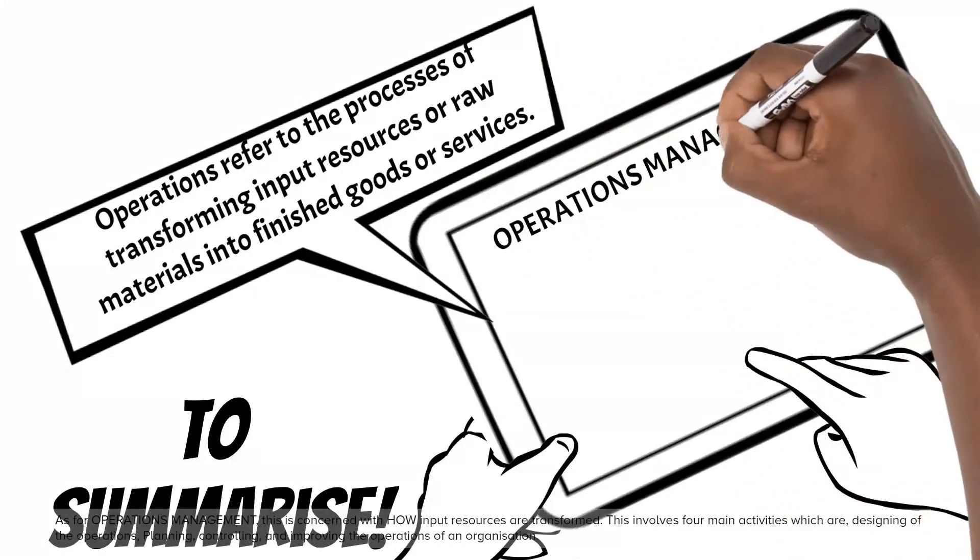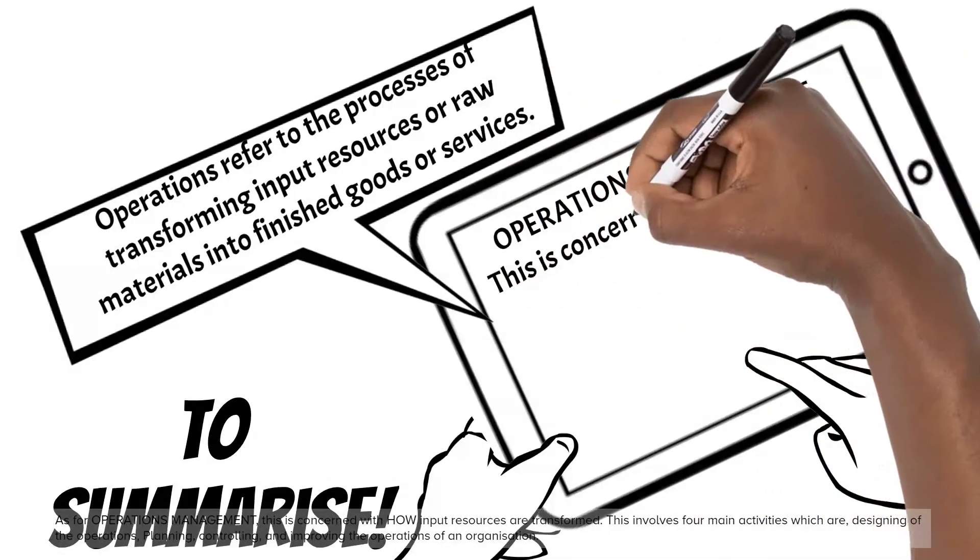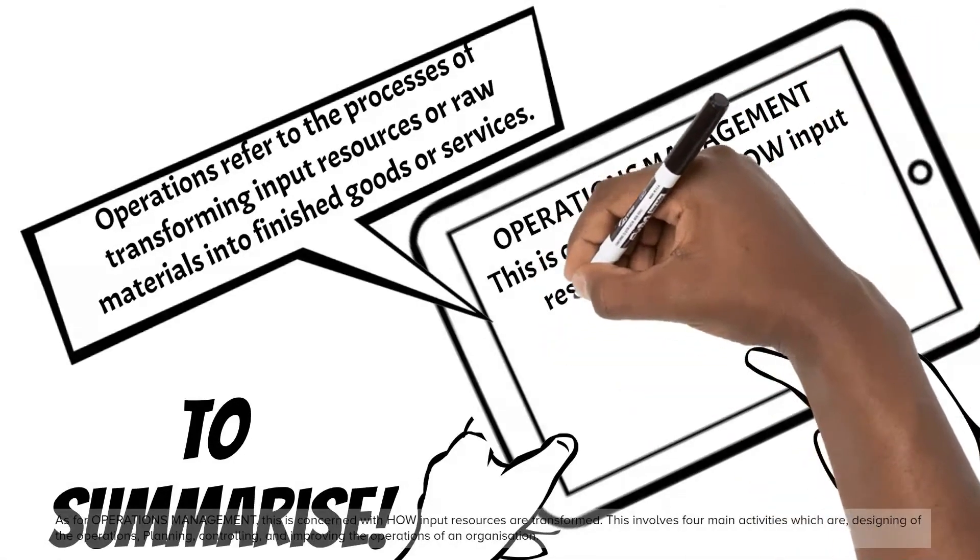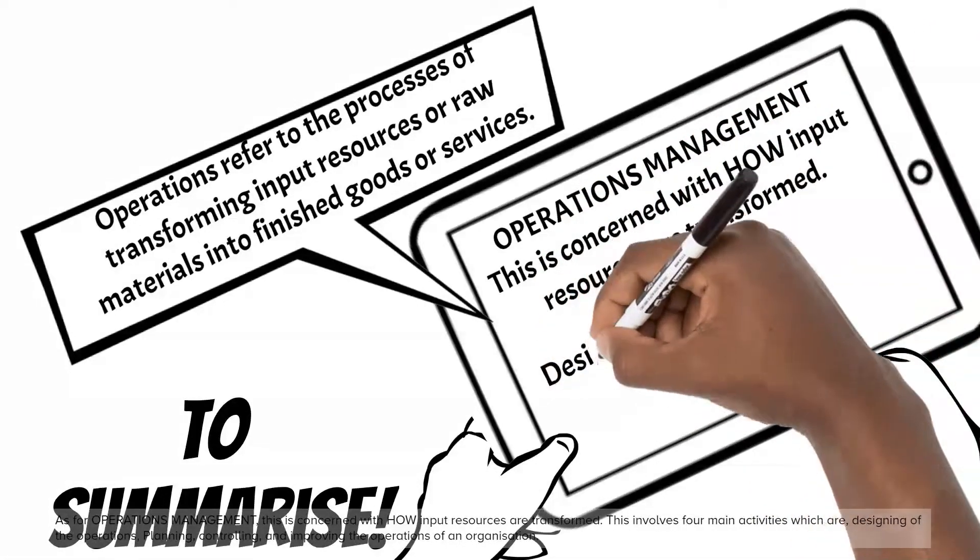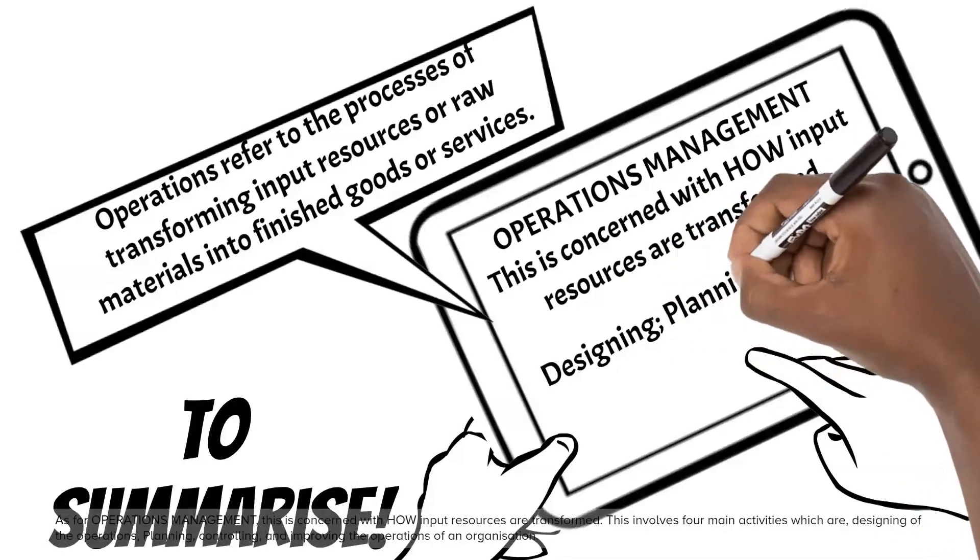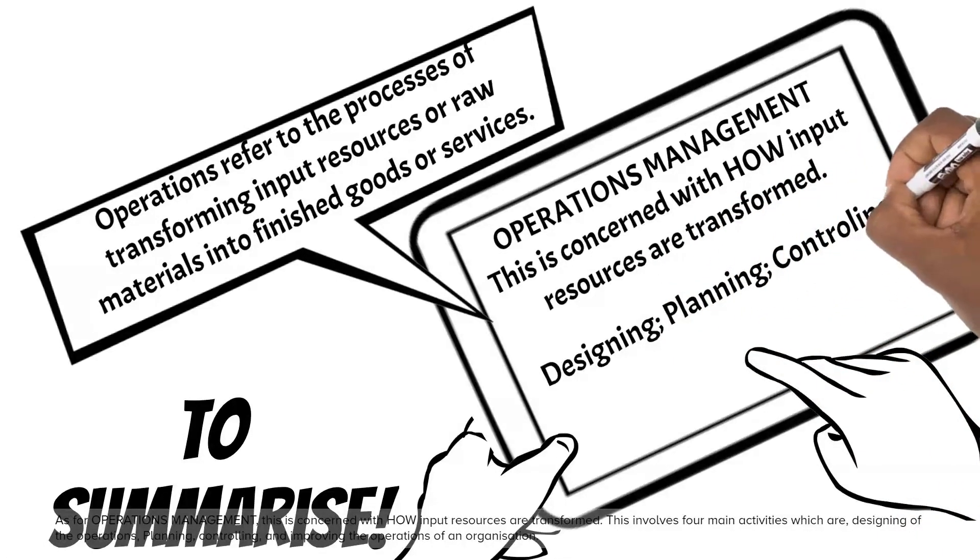As for operations management, this is concerned with how input resources are transformed. This involves four main activities which are designing of the operations, planning, controlling, and improving the operations of an organization.